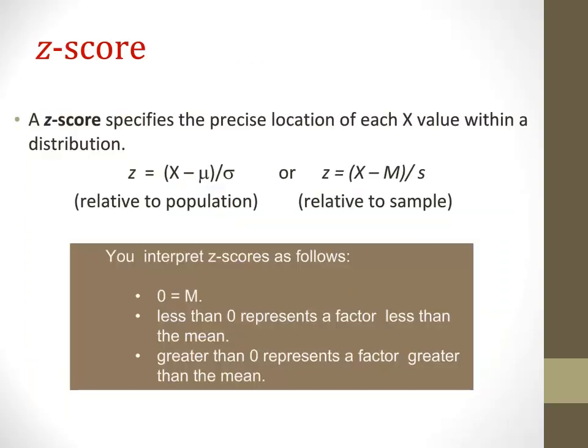A z-score is a standardized score. Here we see the formula — first for a population, then for a sample. For a sample, z equals x minus m (where x is the value) divided by the standard deviation. A z-score specifies the precise location of each value within a distribution in relationship to the mean.